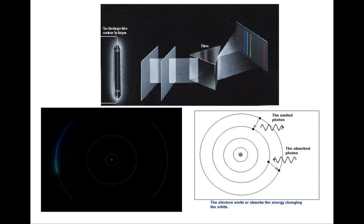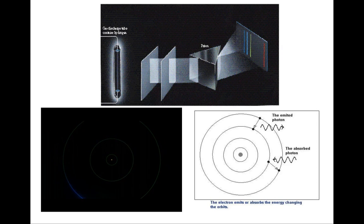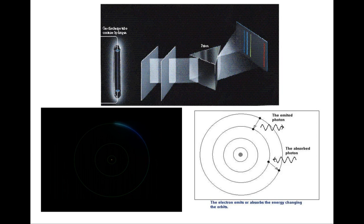Bohr simply dismissed the problem of an electron radiating away its energy by stating that it just didn't happen. Even great scientists cheat sometimes. He postulated that inside an atom electrons only radiate energy when they jump from one allowable orbit to another. And the energy of this radiation reveals the allowable orbits.